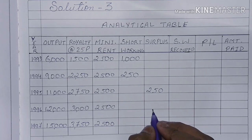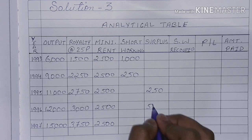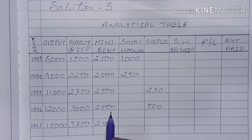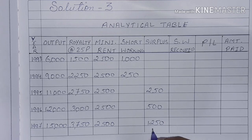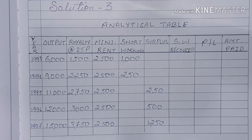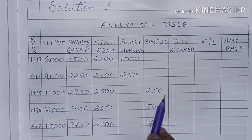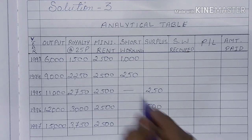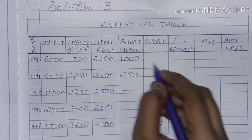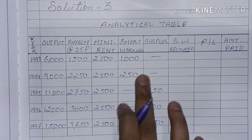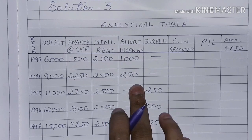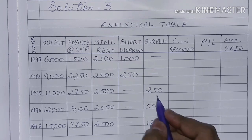Then in year 3, royalty is 2,750 and minimum rent is 2,500, so we have surplus — no short working. Then in year 4, if minimum rent is less we have surplus of 500. Then in the last year (1997), we have $3,750, so surplus. For short working, there are rights in the starting 2 years. So we will have short working balance of 1,000 carried forward.